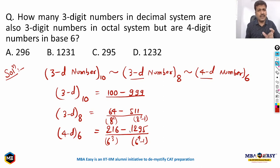So between these three ranges we have to find the common range. The common range will start from 216 because 216 is in every range. 216 is between 100 and 999, between 64 and 511, and in this range 216 is the first number, so we will start with 216.